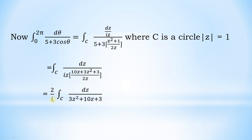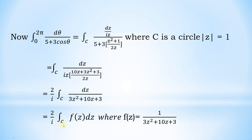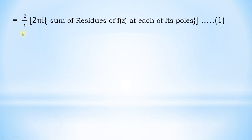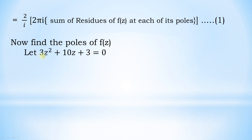This simplifies to (2/i) · ∫_C dz/(3z² + 10z + 3). Applying Cauchy's residue theorem, this equals (2/i) · 2πi · (sum of residues of f(z) at each of its poles inside C). Let this be equation number 1.